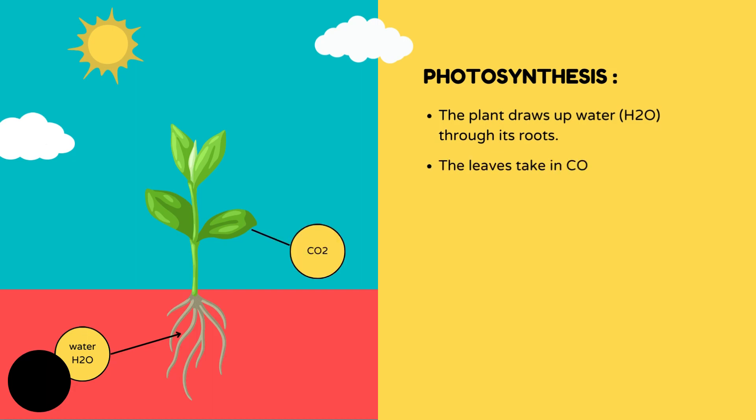Number two, the leaves take in carbon dioxide from the air and the leaves trap energy from sunlight.